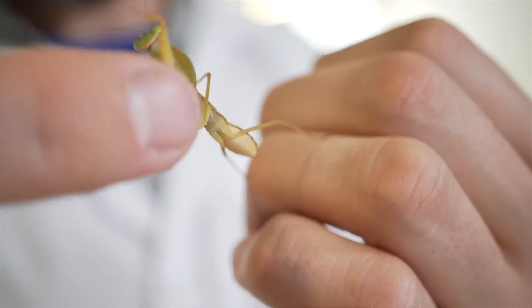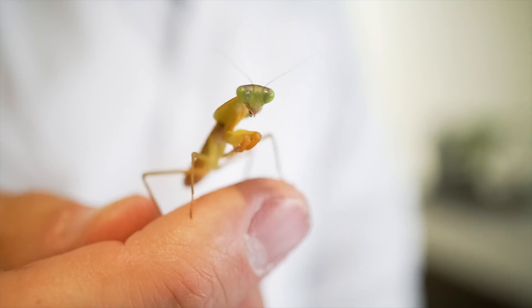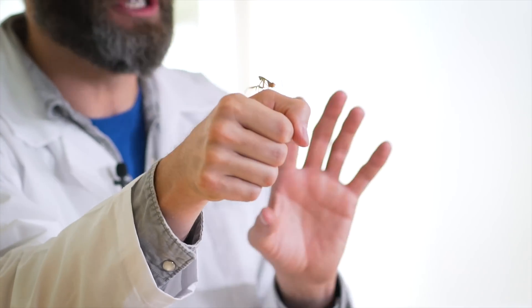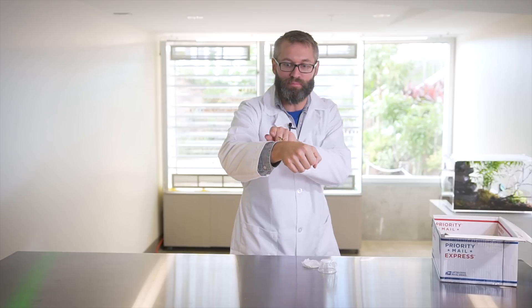So like many of the insects we've been looking at, camouflage is their primary method of defense. But with those huge raptorial forelegs on this massive insect, when she gets big, she can give you a nice big pinch if she wants to.